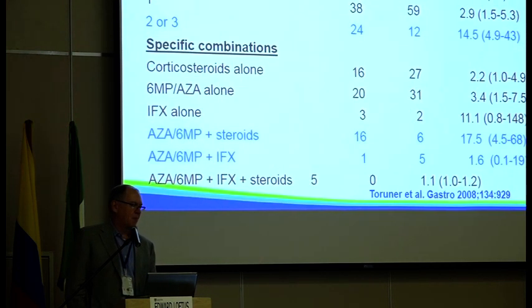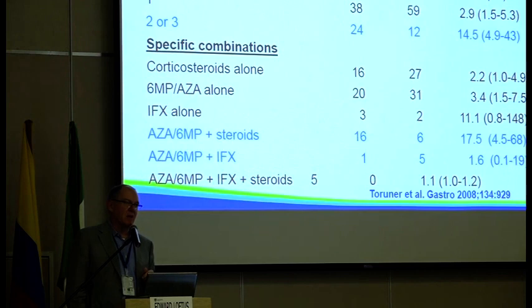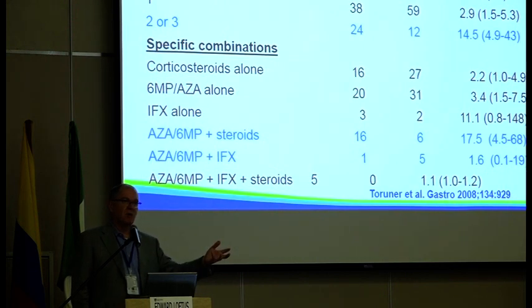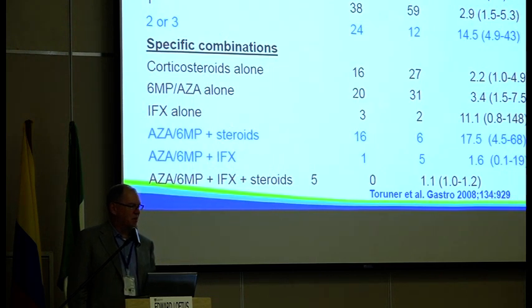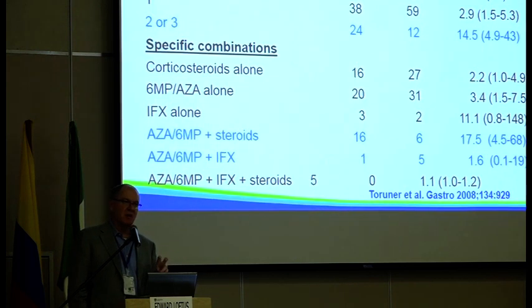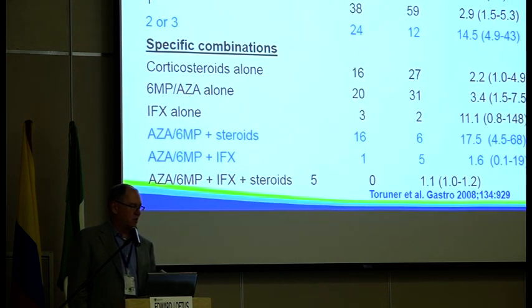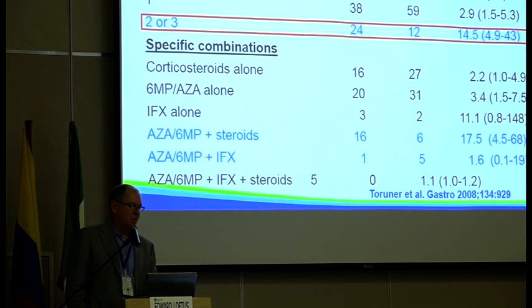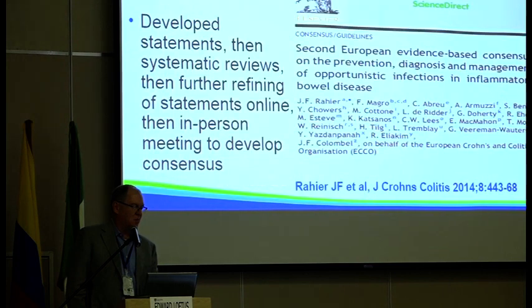A case-control study we did looked at our experience with opportunistic infections in IBD patients — about 100 total cases and 200 matched controls. We found that the more medications a patient was on, the higher the likelihood of an opportunistic infection, and certain combinations caused more infections than others. The biggest risk factor was a combination of an immunomodulator and corticosteroids. We have to be mindful about how many medications we have our patients on.